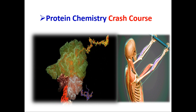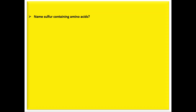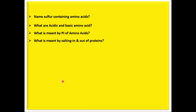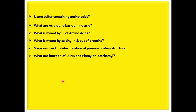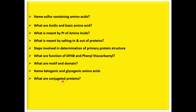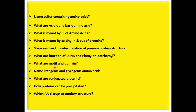The important questions discussed in this lecture include: name sulfur-containing amino acids; what are acidic and basic amino acids; what is the pI of amino acids; what is meant by salting in and salting out of proteins; steps involved in determination of protein primary structure; what are the functions of FDNB and phenyl thiocarbamyl; what are motifs and domains; name ketogenic and glycogenic amino acids; what are conjugated proteins; how proteins can be precipitated out; and which amino acid disrupts secondary structure — a very important viva question.